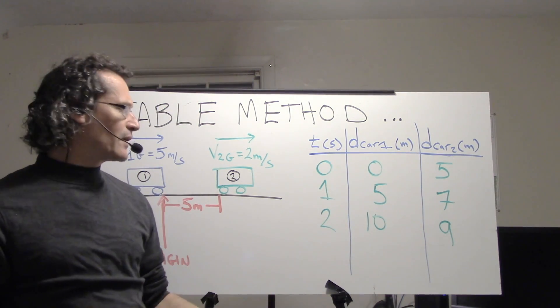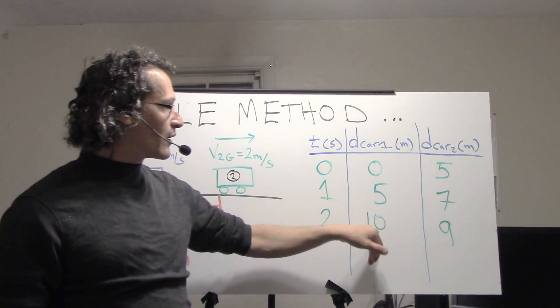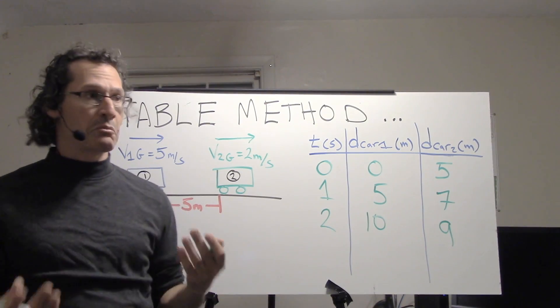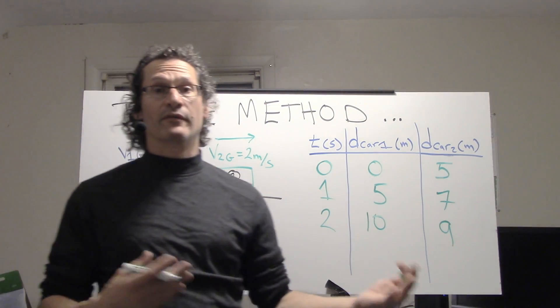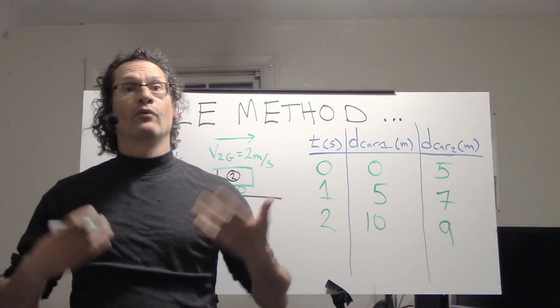So we know that somewhere between second one and second two, car one overtakes car two. That's what a table is telling us. So why don't we try a different value? How about somewhere between one and two? Let's choose one and a half—1.5.